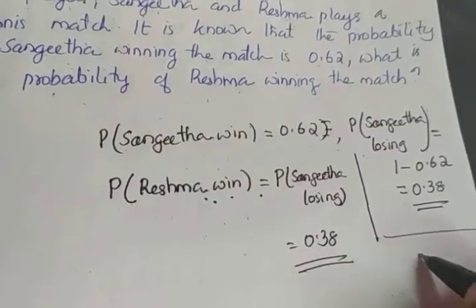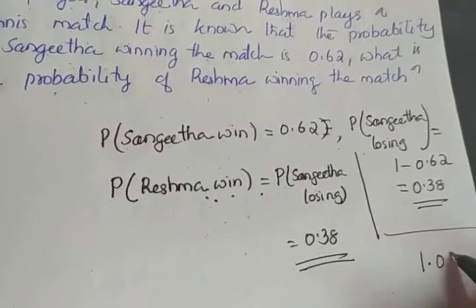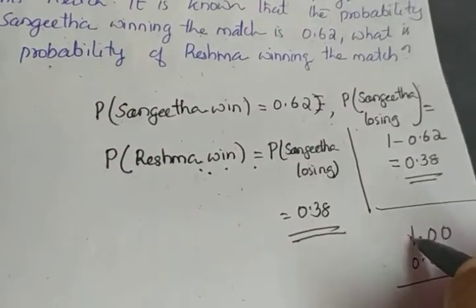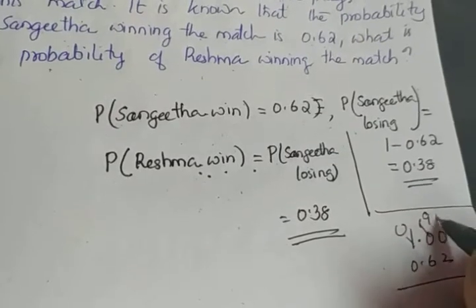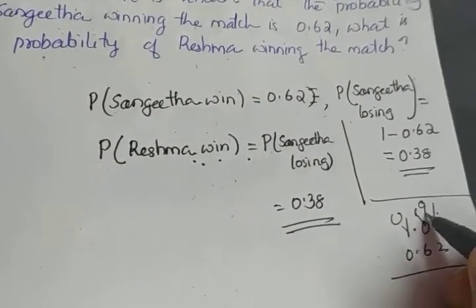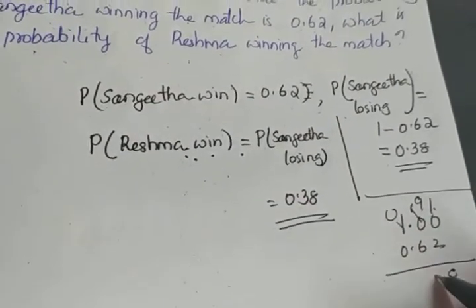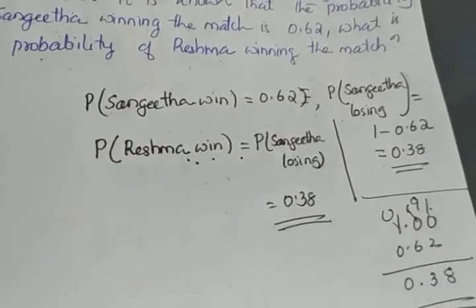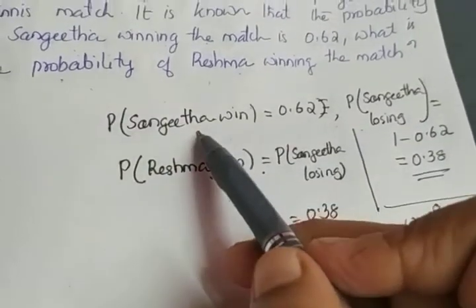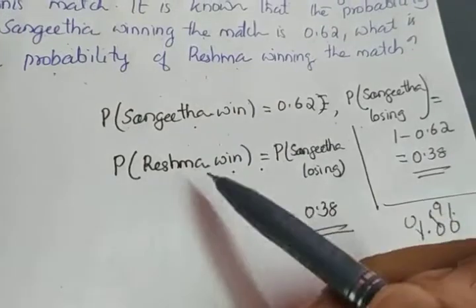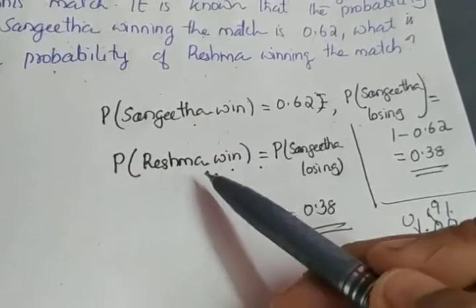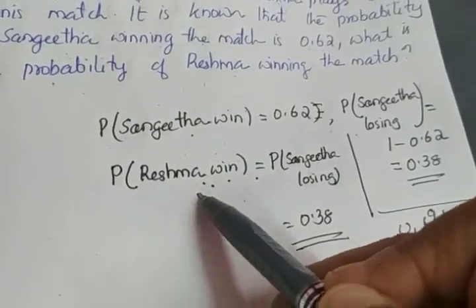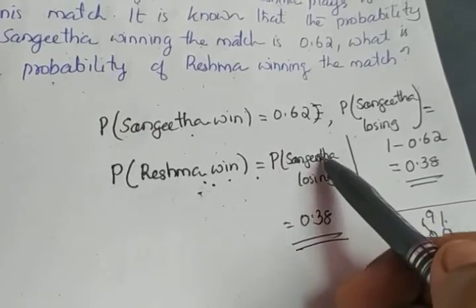We subtract 1 minus 0.62. We borrow 1, so this becomes 9. 10 minus 2 gives 8, 9 minus 6 gives 3, and 0 minus 0 is 0 — giving 0.38. So if Sangeeta has to win, Reshma has to fail. In the reverse way, if Reshma has to win, Sangeeta has to fail. Reshma winning means it is equal to Sangeeta losing.